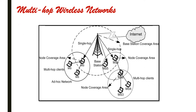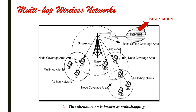Basically, if there is no direct communication link between the source and the target, it is possible to pass through one or more intermediate stages on the way to the target. This phenomenon is known as multi-hopping.